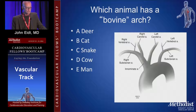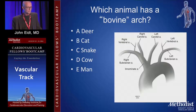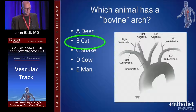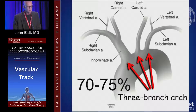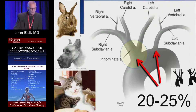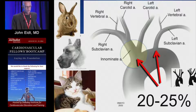Which animal has a bovine arch? A cat has a bovine arch — that just doesn't make any sense, does it? The three-branch arch is the most common, about three out of four. Two branches, which is cats and rabbits and dogs, that's what we call a bovine arch — about 20 or 25%.